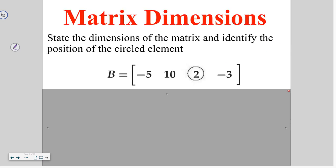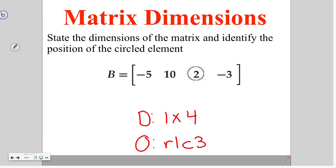So, go ahead and state the dimensions of this matrix, and then identify the position of this circled element right here. Dimensions are one by four, there's only one row, and there are four separate columns, and then our circled element is in row one, obviously since there's only one row, and column three.